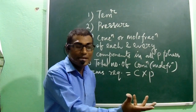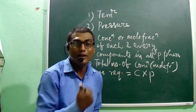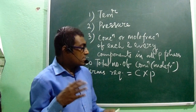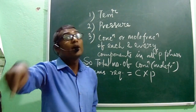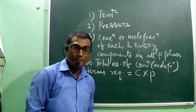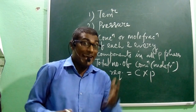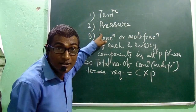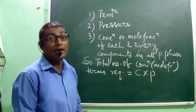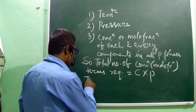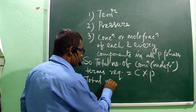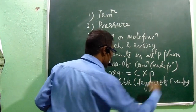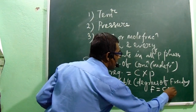For example, if there are two components in two phases, there will be four concentration variables. Thus, the total number of independent variables is Cp (concentration terms) plus one pressure term and one temperature term, giving F = CP + 2.